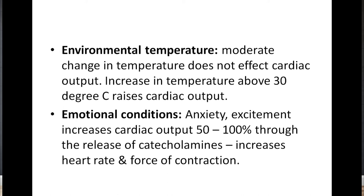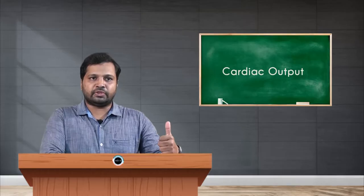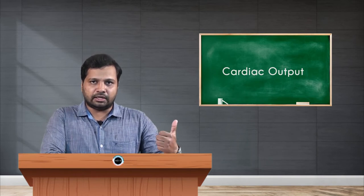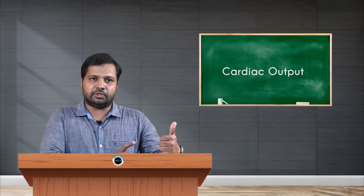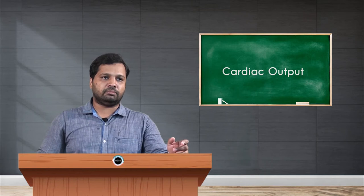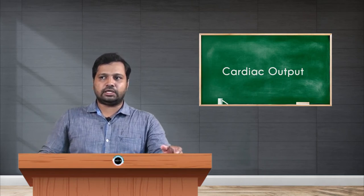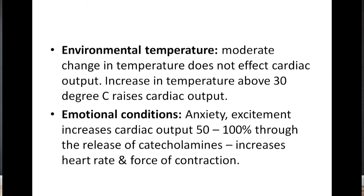The next factor is environmental temperature. A moderate change in temperature, between 24 to 30 degrees Celsius, does not affect cardiac output. However, if the temperature rises above 30 degrees Celsius, cardiac output increases. This is because blood flow to the periphery increases to cope with the external temperature, causing the heart to pump more blood.